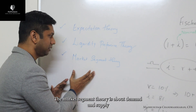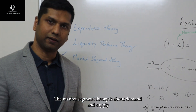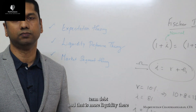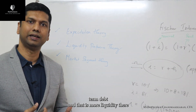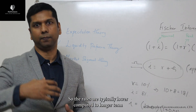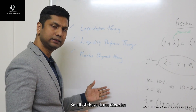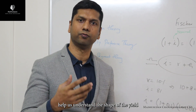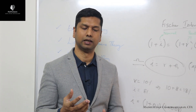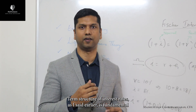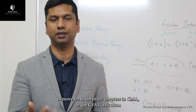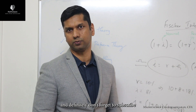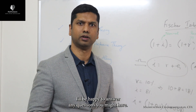The market segment theory is about demand and supply. People typically issue more short-term debt, and there is more liquidity there, so rates are typically lower compared to longer-term instruments. All three theories help us understand the shape of the yield curve or the term structure of interest rates, which is fundamental to moving on to the other chapters in the CMA or CFA curriculum. If you have any questions, leave a comment below, and don't forget to subscribe.